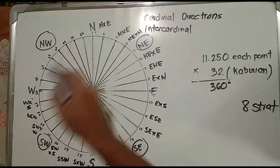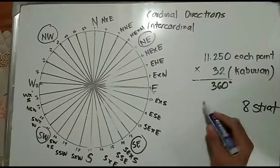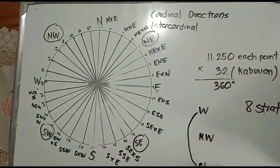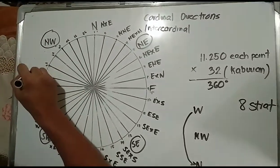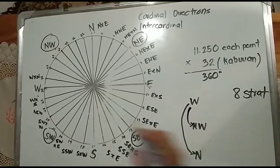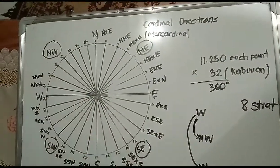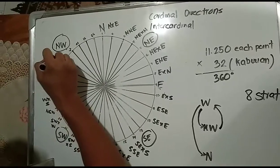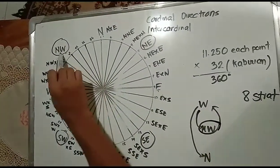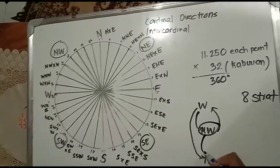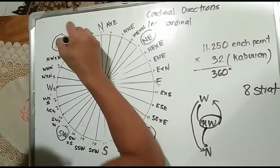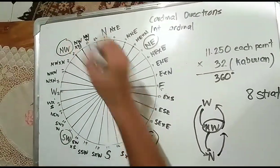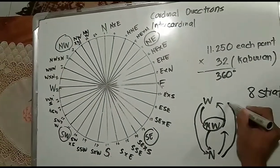The last quadrant is the fourth: west, northwest and north. First step: west by north. Second: west northwest. Third: northwest by west. Fourth is the intercardinal direction. Going down: northwest by north. Next: north northwest. The last one, from north going to west: north by west.